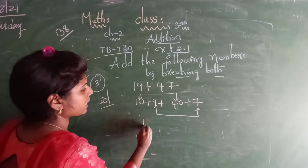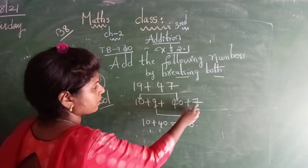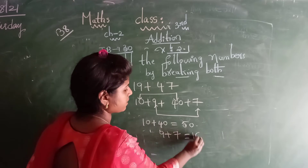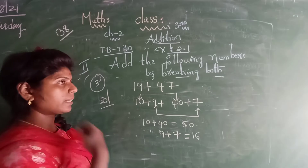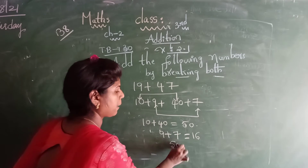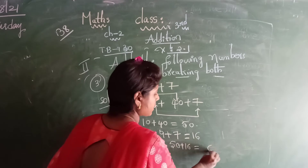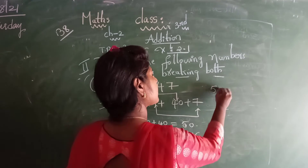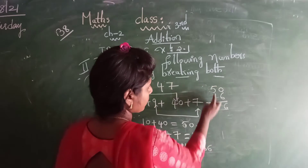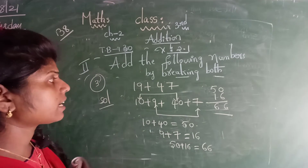Now do the addition. 10 plus 40 equals 50. 9 plus 7 equals how much? 16. So overall the addition is 50 plus 16. 6 plus 0 is 6, 5 plus 1 is 6. So what is the answer now? 66 is the answer.